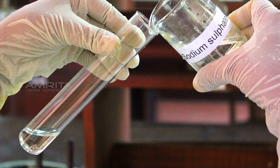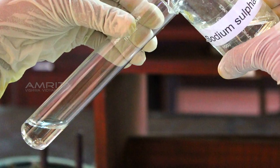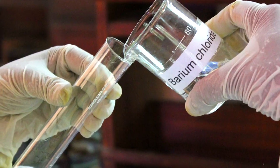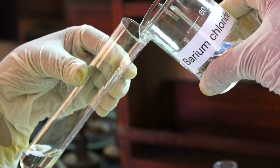Take a small quantity of sodium sulphate solution in a boiling tube. Then, take a small quantity of barium chloride solution in another boiling tube.